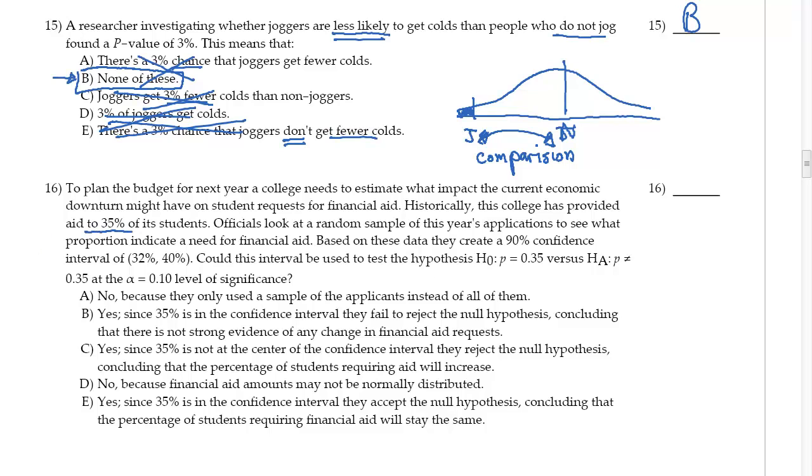Historically, this college has provided aid to 35% of its students—guessing that this is going to be my p, my 35% right here. Officials look at a random sample of this year's applications to see what proportion indicate a need for financial aid.